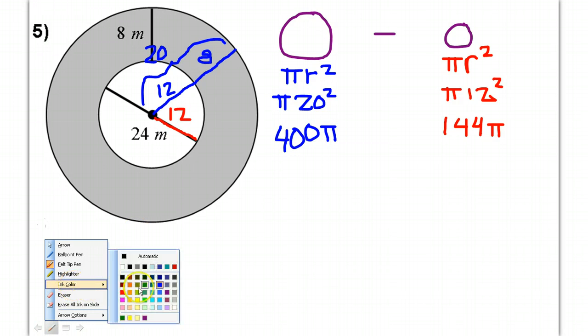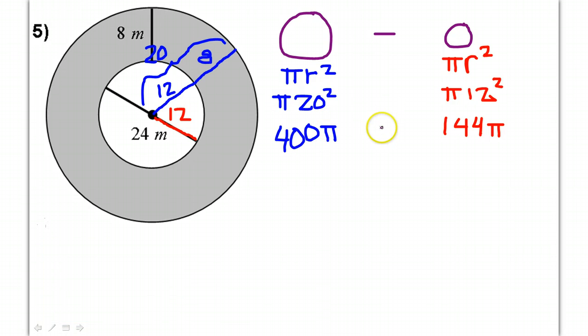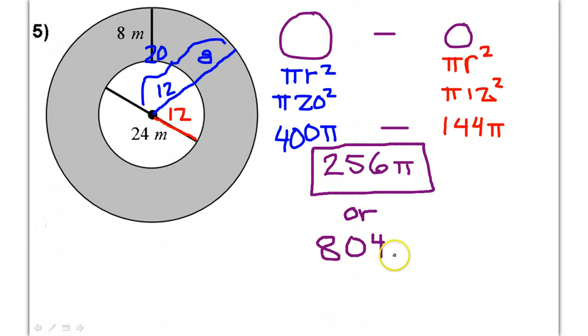Now if we put this together, we have to subtract, so we have to do 400 pi minus 144 pi. So that's going to be 256 pi, and if you're looking for an exact answer that would be it, or you could write that as a decimal which would be 804.25 square meters and that's it.